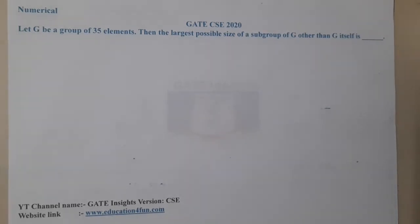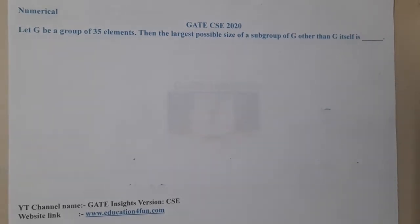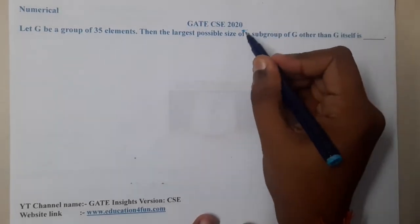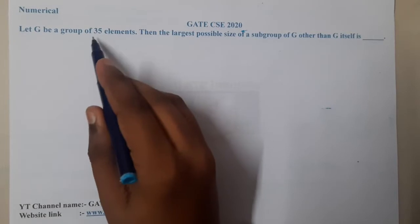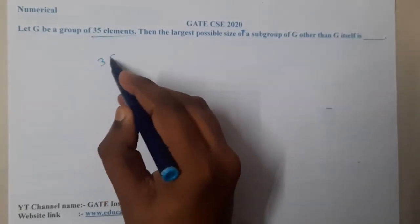Hello guys, we are back with our next lecture. In this lecture, let us go through the next question. So this question belongs to GATE CSC 2020. The question is: let G be a group of 35 elements.